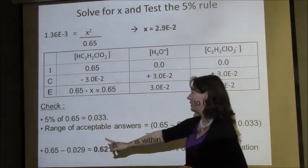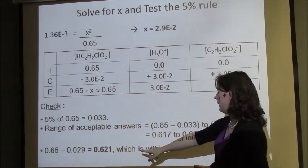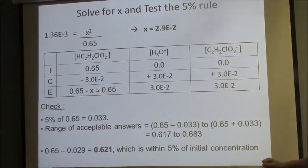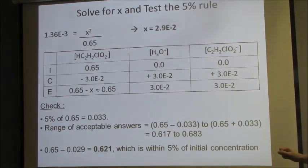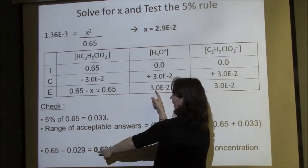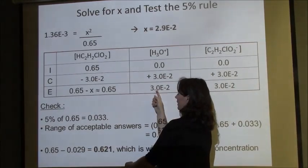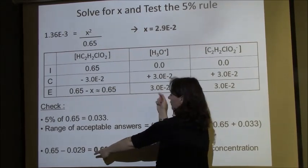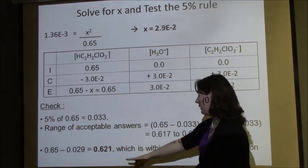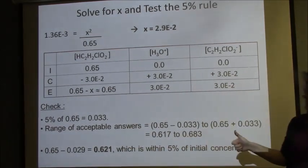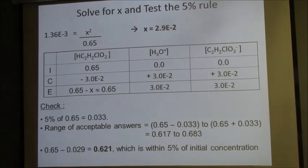When I do subtract it out, I get 0.621, which is in that range. I come to the conclusion—now the reason it's 0.029, it's just I rounded here. This is 3 times 10 to the negative 2 versus 0.029. This is just a rounded version of this. When we subtract that out, this is within the acceptable range, so I conclude that it was okay to use this approximation.